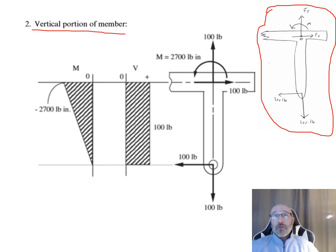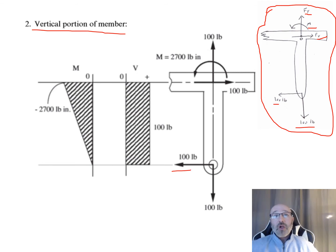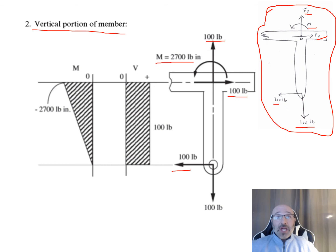For the vertical component, we draw out the free body diagram by hand with all actual values: F_X, F_Y, the moment at the top, and the 100-lb tension forces from the cable at the bottom. Having these free body diagrams drawn allows us to line up the shear and moment diagrams directly alongside them. We align at our start point and begin constructing the shear and moment diagrams.